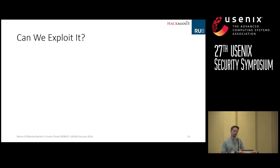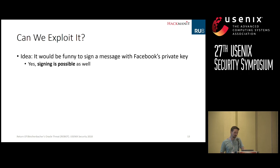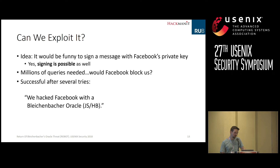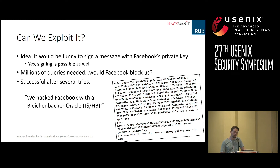We wanted to prove it somehow. In Bleichenbacher's attack you typically decrypt some handshake messages, but we had an idea: it would be interesting to sign a message with Facebook's private key. What many people do not know is that Bleichenbacher's attack can also be used for signing messages — it allows you to decrypt messages or to sign messages, performing any private key operation if the server is vulnerable. After several attempts, we were really surprised that it works. We were able to sign a message to Facebook with our initials. We have a script on our webpage with the signature that downloads the certificate from certificate transparency and validates that this message is really signed with Facebook's private key.